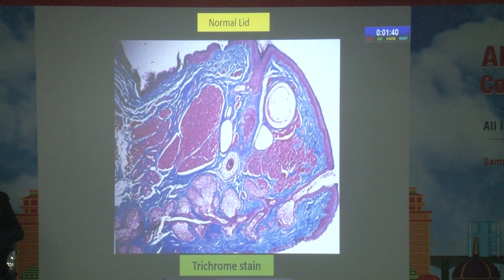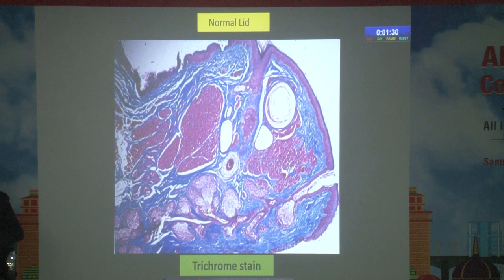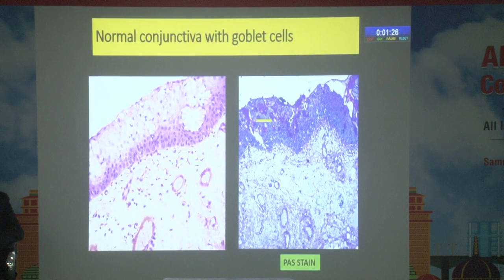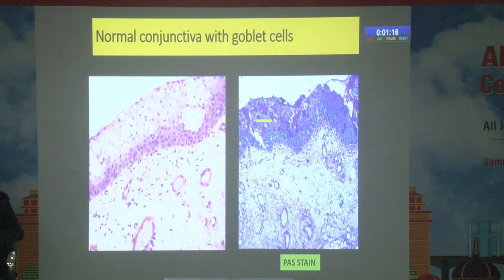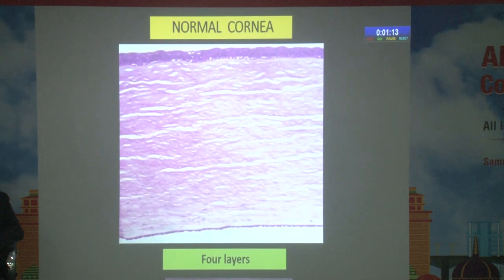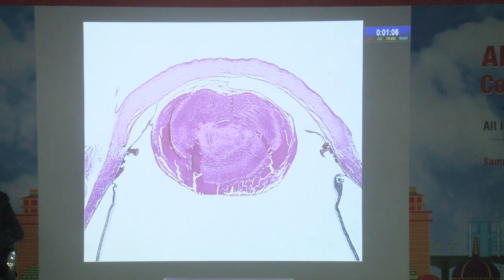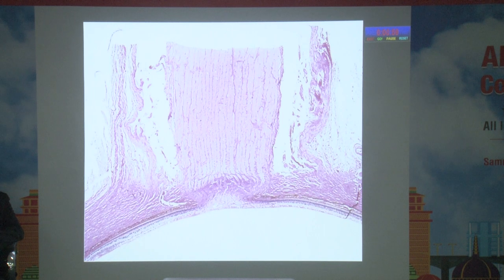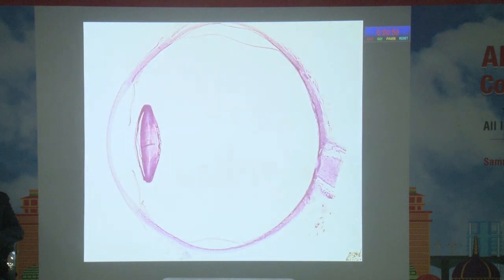Normal histology of the eye: the eyelid contains the epidermis, dermis with muscle fibers, Meibomian glands, hair follicles, and accessory glands. The normal conjunctiva contains goblet cells — foamy cells which are pink with acid mucopolysaccharide stain — and the stroma has vascular channels. The normal cornea has five layers: epithelium, Bowman's layer, stroma, Descemet's membrane, and endothelium. The normal lens is seen as well as the optic nerve head with the lamina cribrosa. This shows the whole globe in cut section stained with hematoxylin and eosin.